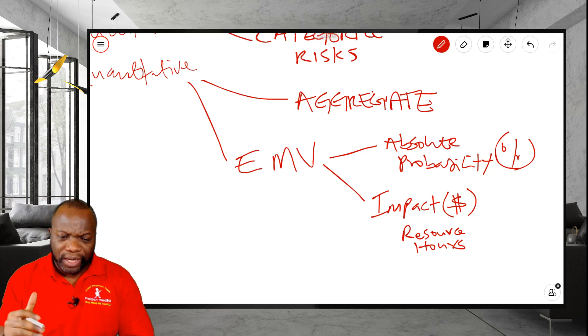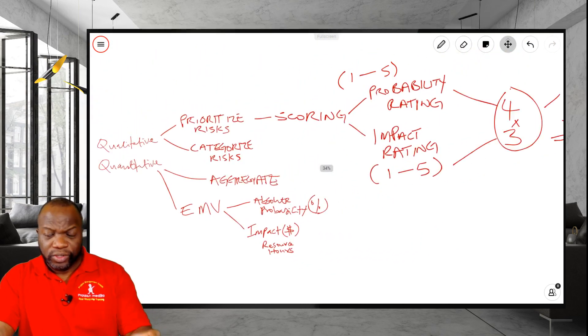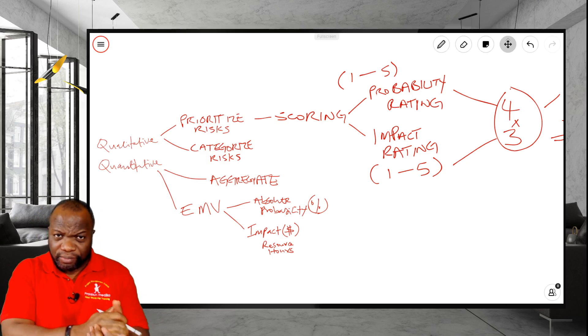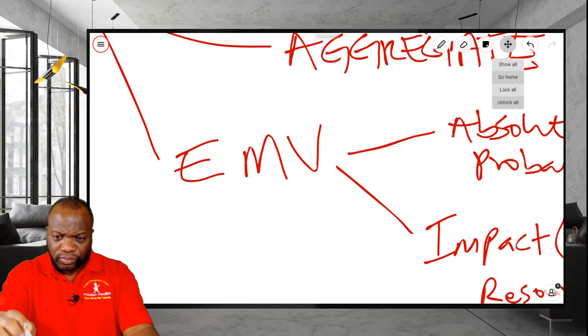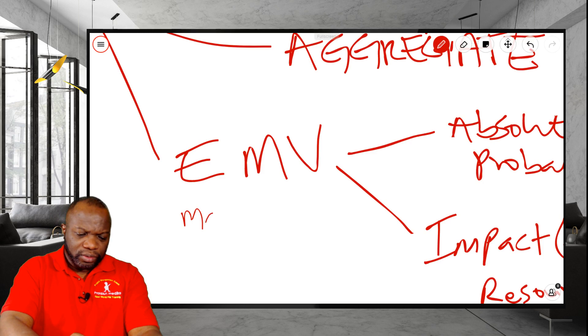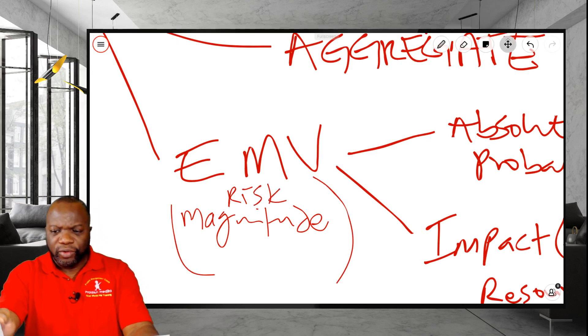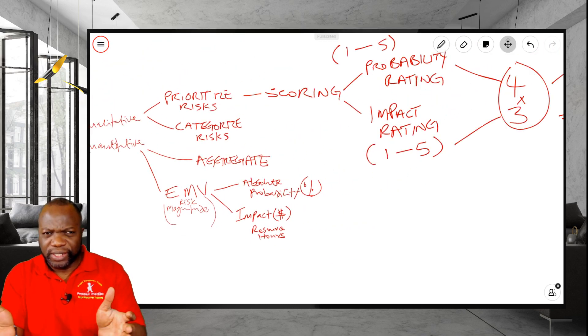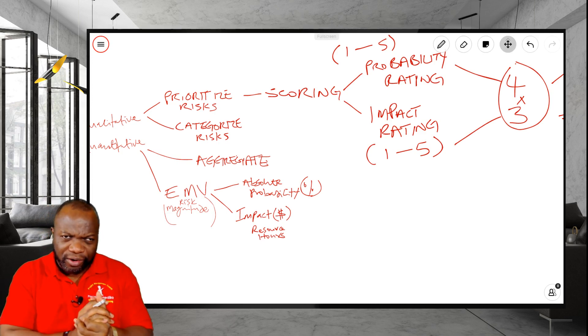This is the major distinguishing factor between a risk score, which is just some numbers on a scale, versus EMV, expected monetary value, which we also refer to as a risk magnitude. However you want to spin it, it's very clear there's a difference between numbers on a scale, versus an absolute dollar amount, or an absolute resource hour amount, or absolute probability combined with it.